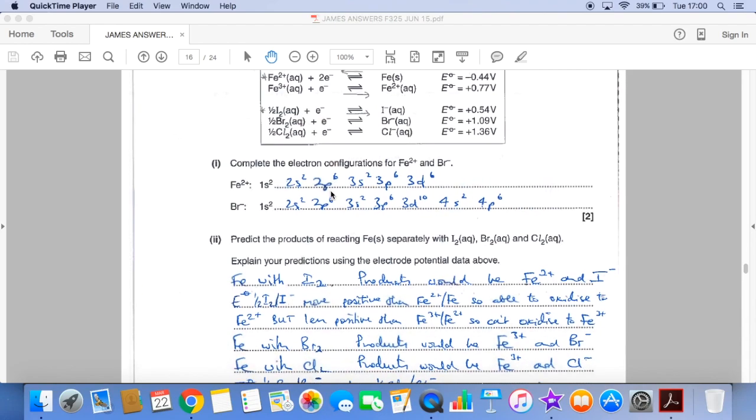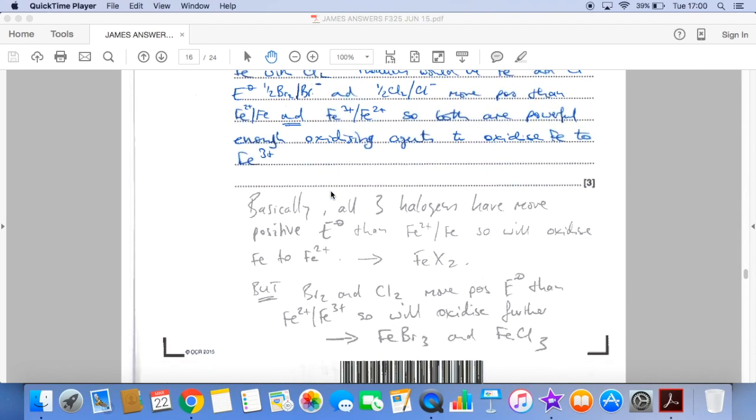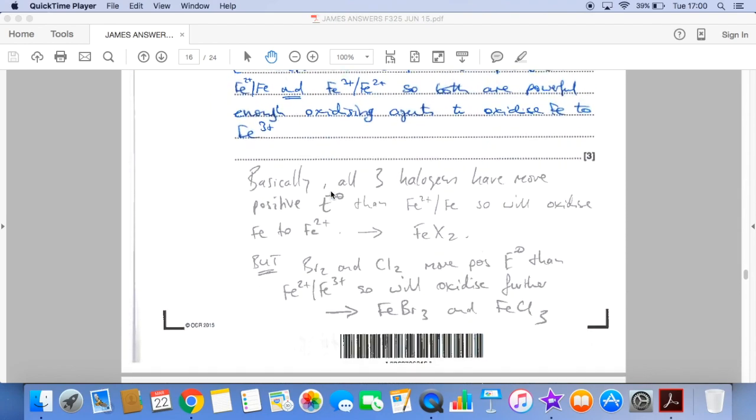So I've got a better answer to that down here. So what I'm saying is basically all three halogens have got more positive electrode potentials than the Fe2+/Fe system. So they'll all oxidize iron to iron(II). So you're going to get FeI2, FeBr2, FeCl2. However, bromine and chlorine are more positive than the Fe2+/Fe3+ system. And so they can oxidize further. And so you'll get FeBr3 and FeCl3 with those.